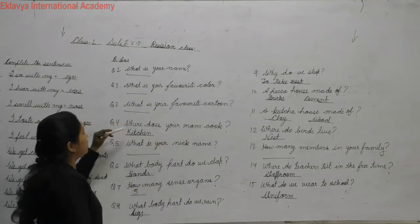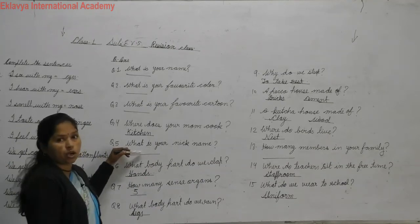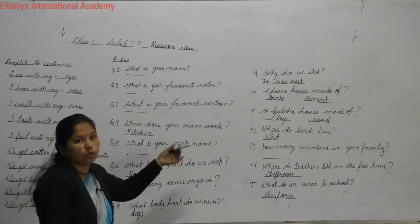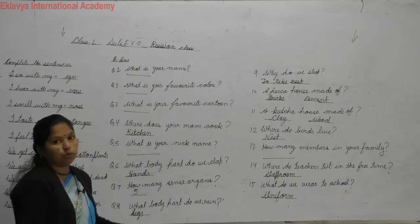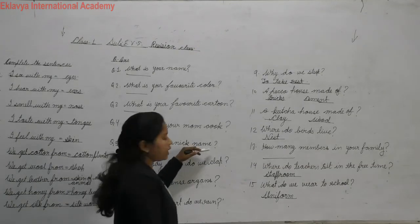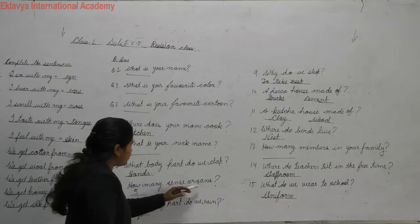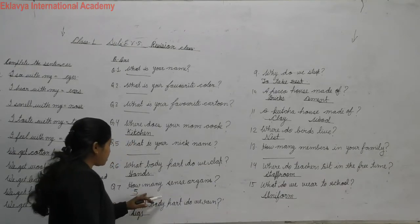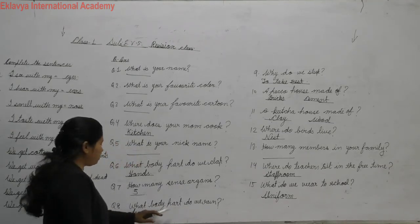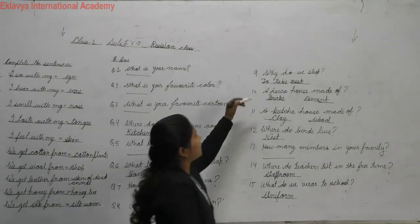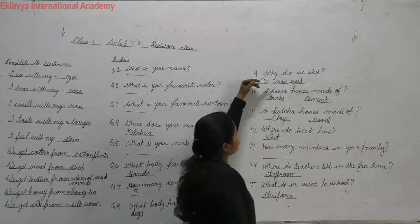Where does your mom cook? My mom cooks in the kitchen. What is your nickname? Nickname is what your family calls you at home — like Golu, Pintu, or a short name. What body parts do we clap with? Hands. How many sense organs? Five — eyes, nose, ear, tongue, and skin. What body parts do we run with? Legs. Why do we sleep? To take rest for our body, to relax.